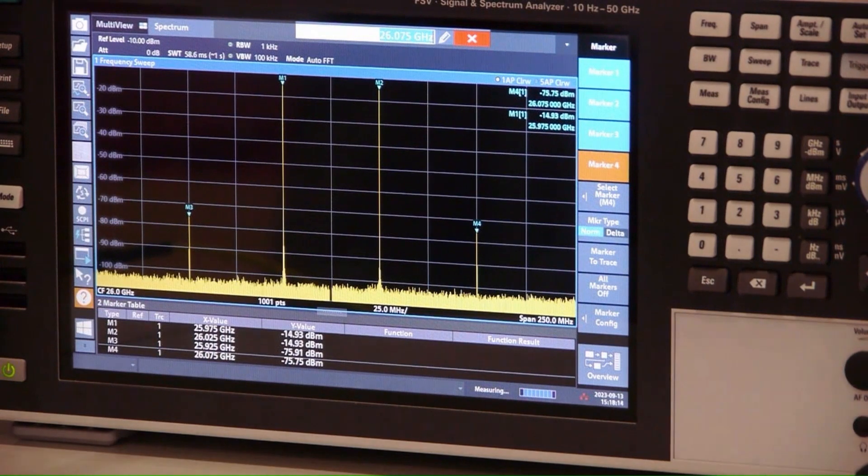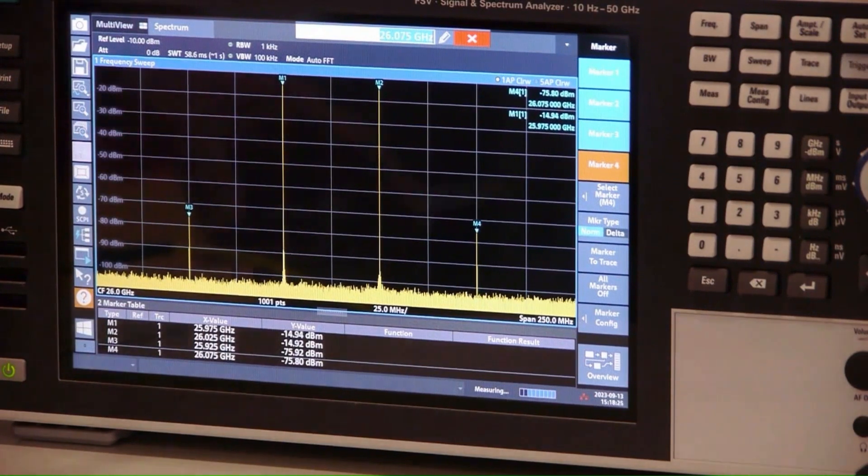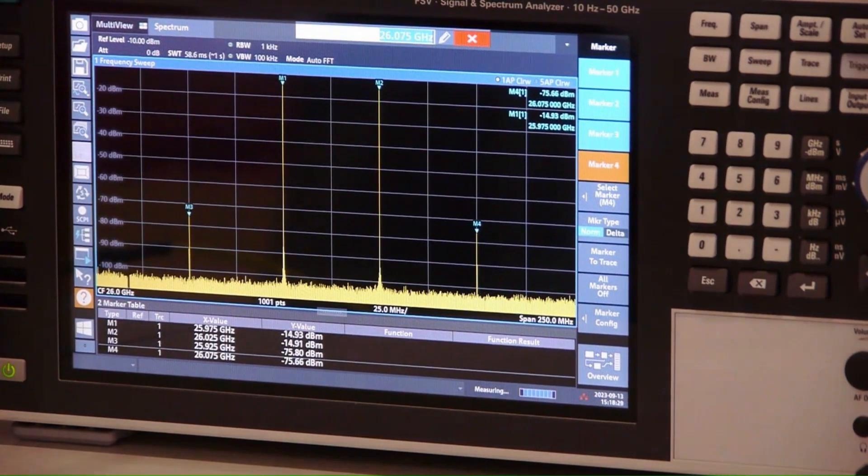To obtain the output IP3, we simply halve the output IMR, the intermod ratio, so 61 dBs becomes 30 and a half dB, and add it to the level of the test signals at the output, the minus 15 dBm, to get an output IP3 of plus 15 and a half dBm.